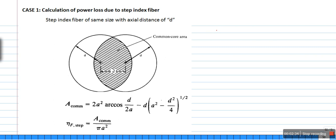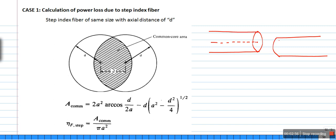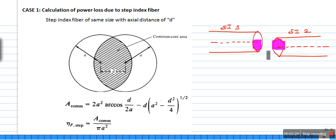Let us consider two step index fibers. Here is the core end face of fiber one, and this is the second step index fiber. So this is step index fiber one and this is step index fiber two. When we try to join these two fibers, only certain areas from fiber one and fiber two are face-to-face with each other.